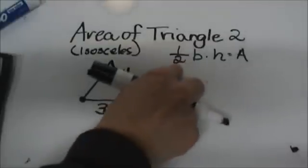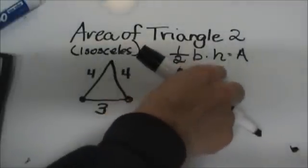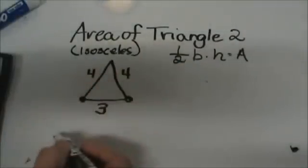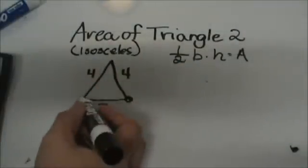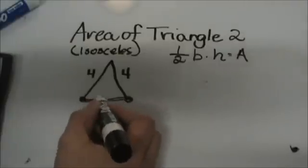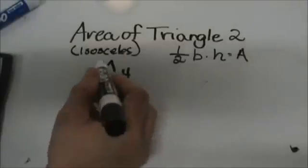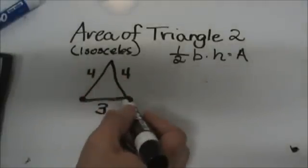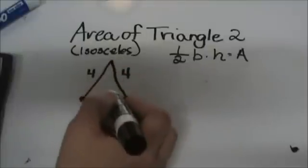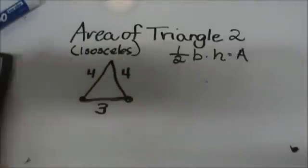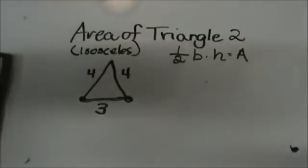The area of a triangle is one half the base times the height. Since we have an isosceles triangle, I am going to use the side that is not the same as my base. You can turn it different ways, but I am using that as my base because I can figure the height out from it.